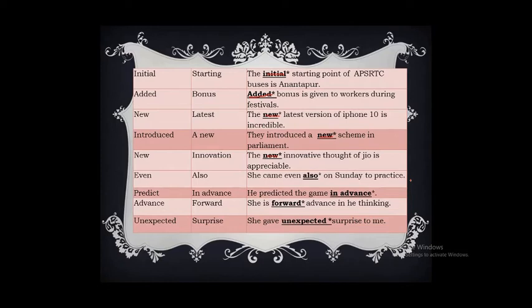'Even also' — 'She came even on Sunday to practice' means including Sunday she came to practice. So we should not use 'also' here, as 'even' already implies inclusion. You can use either 'She came even on Sunday to practice' or 'She came also on Sunday to practice.' 'Predict in advance' — predicting means assuming something in advance, so using 'in advance' again is superfluous. The correct form is: 'He predicted the game.'